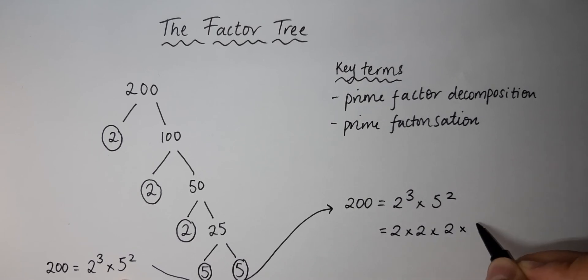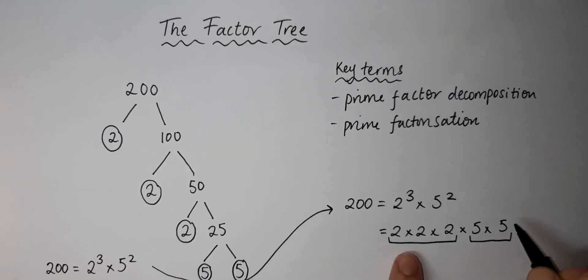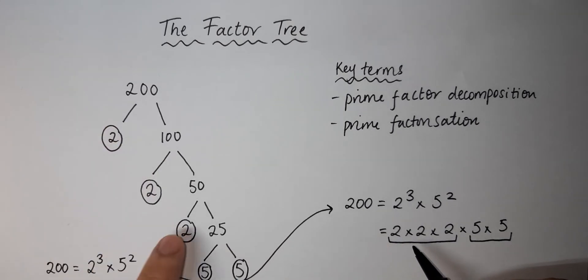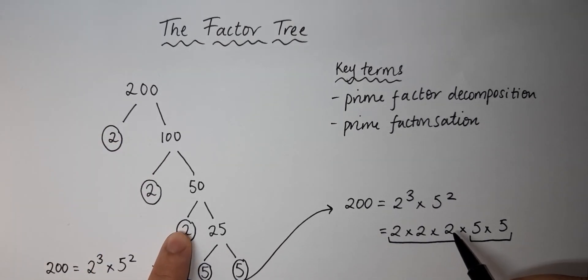So if we have 200 equals 2 cubed times 5 squared, we can also have it as 2 times 2 times 2 times 5 times 5. This shows you in a clearer way that there's three 2s here, which are also here, and there's two 5s here, which are also here.